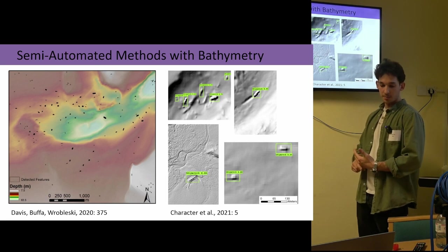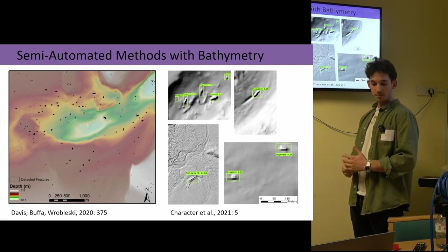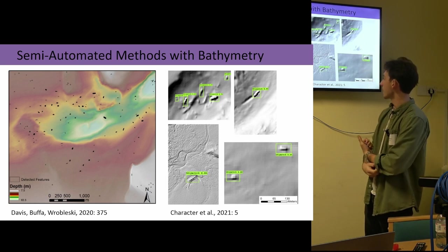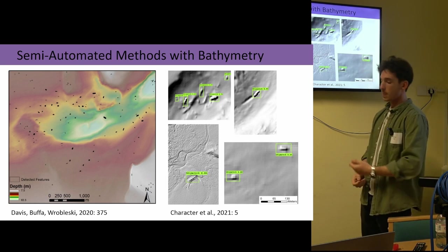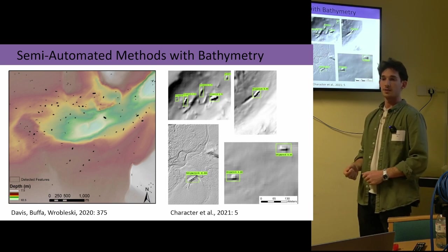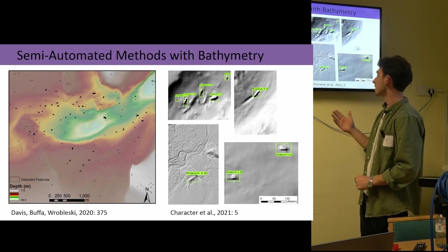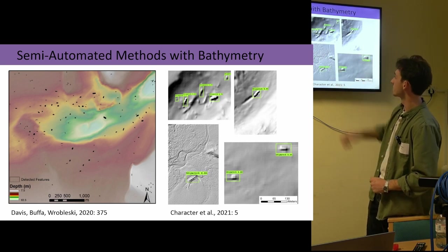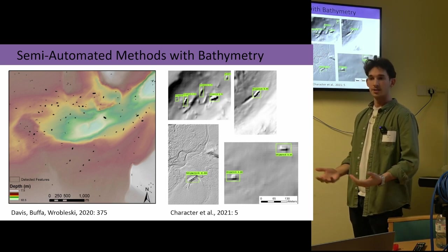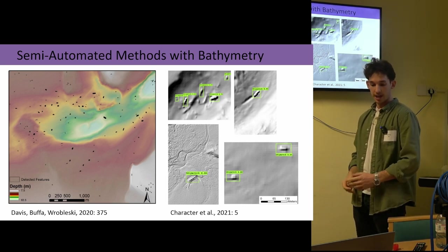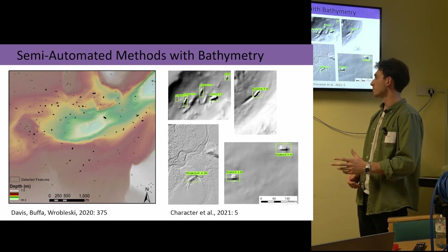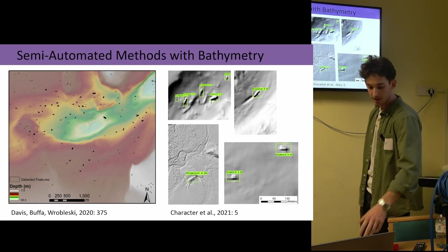So turning specifically to an example of machine learning now. Here are some really interesting results from a paper from Character et al a couple of years ago, where they're able to have trained a machine learning model to detect shipwrecks with over 90% accuracy in certain sections. And we're seeing some examples here. The numbers in the boxes are just the confidence score that the algorithm is outputting, whether or not how confident it is in that detection is a shipwreck. And they were also able to do this at different resolutions as well, which is really interesting to think about potential further applications for marine survey.